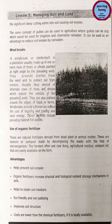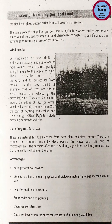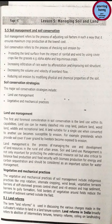Method 8 — Use of organic fertilizers: these are natural fertilizers derived from dead plant or animal matter, such as manure or compost made by decomposing waste with the help of microorganisms. Farmers often use cow dung, agricultural residue and compost that are easily available on the farm. Advantages: helps prevent soil erosion; increases physical and biological nutrient storage mechanisms in soil; helps retain soil moisture; is eco-friendly and non-polluting; improves soil structure; and costs less than chemical fertilizers if locally available.